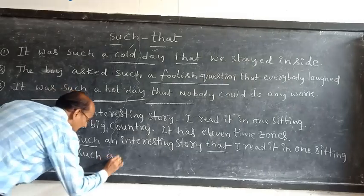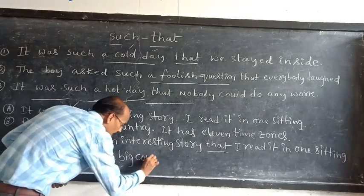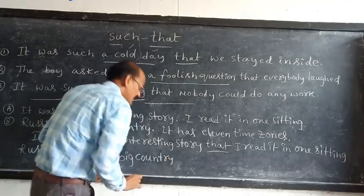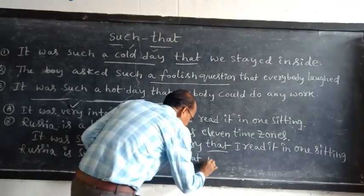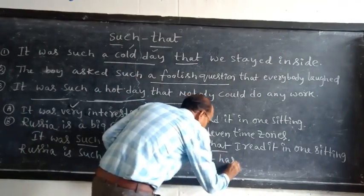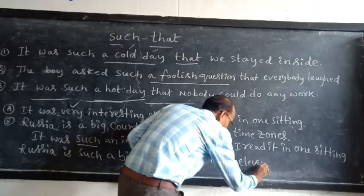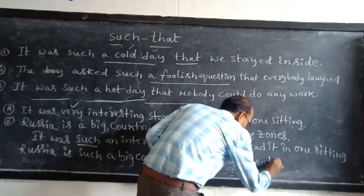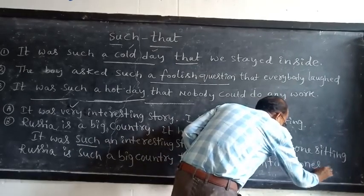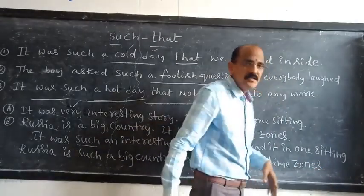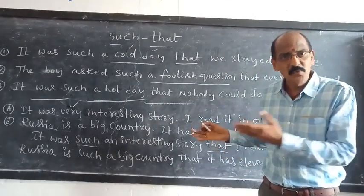Russia is such a big country — meaning it has 11 time zones. You can find and practice this kind of sentences from your textbook.